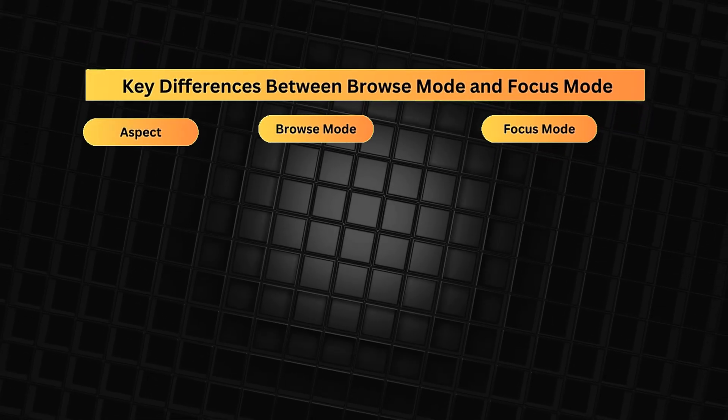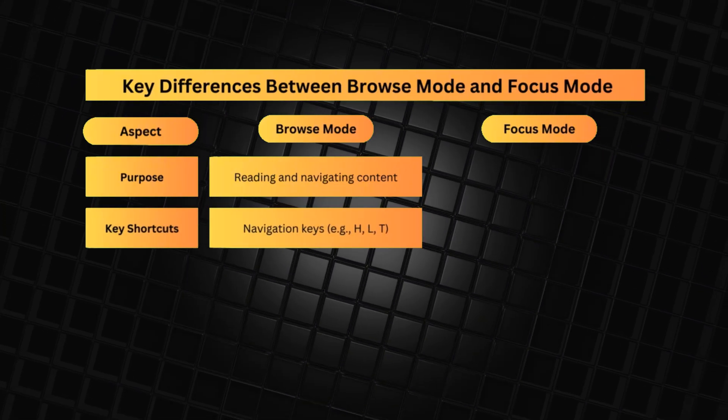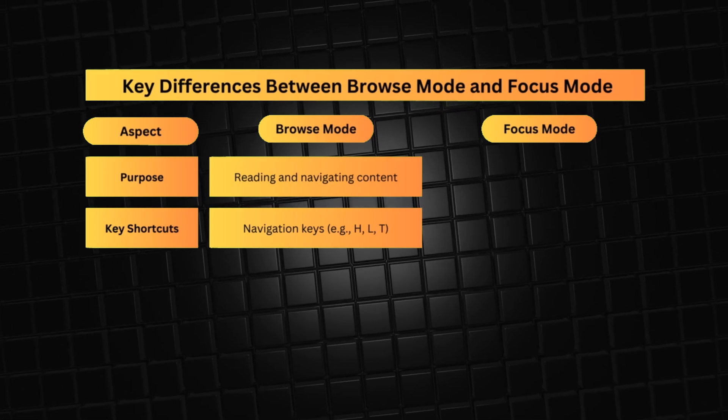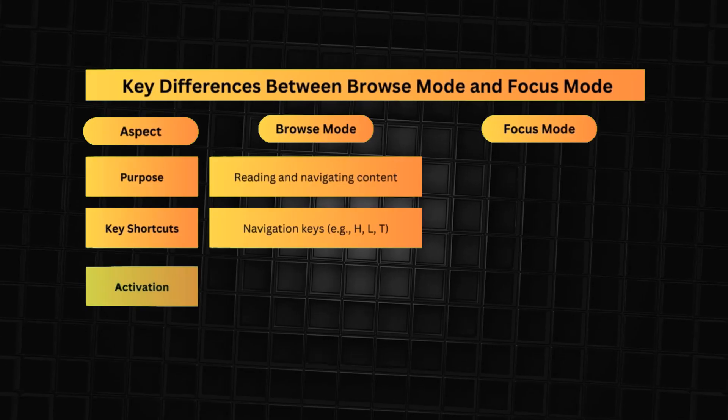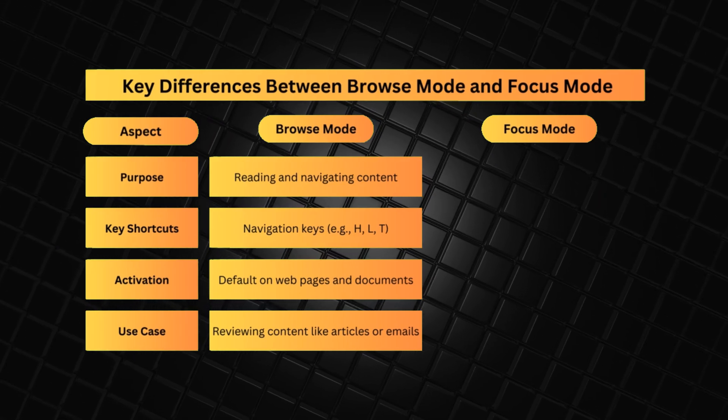Moving on, NVDA offers two primary modes: Browse mode and Focus mode, each designed for different types of content and interactions. Browse mode is optimized for reading and navigating static or text-heavy content such as web pages, emails, or documents. It allows quick navigation using single-key shortcuts — for example, H for headings, L for links, and T for tables. It reads content in a linear, top-to-bottom manner. Best use cases are reading articles, reviewing emails, and navigating through general web page structures.